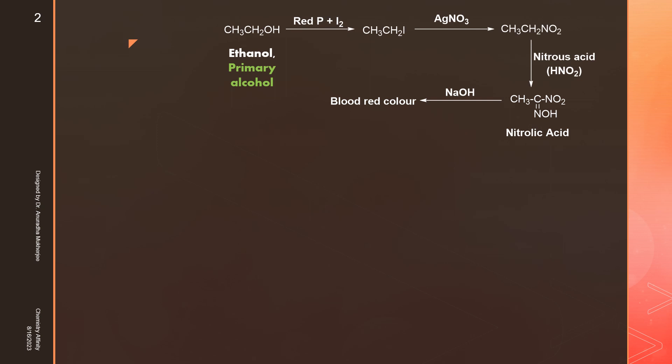Primary alcohol reacts with red phosphorus iodine to give alkyl iodide. Alkyl iodide reacts with silver nitrate to give nitroalkane. When nitroalkane reacts with nitrous acid it converts to nitrolic acid. If we add sodium hydroxide solution, nitrolic acid gives blood red color.